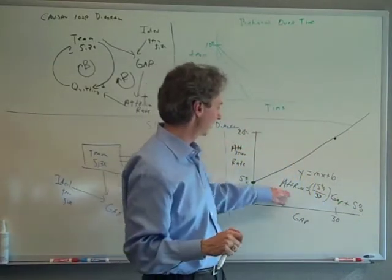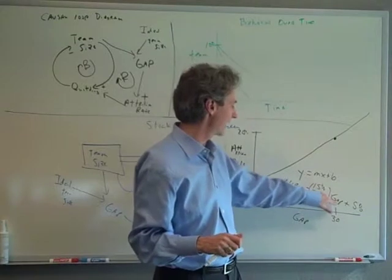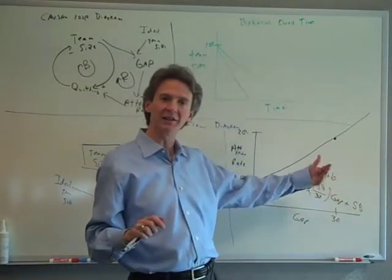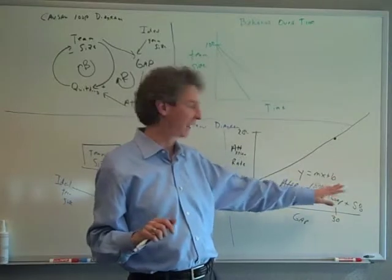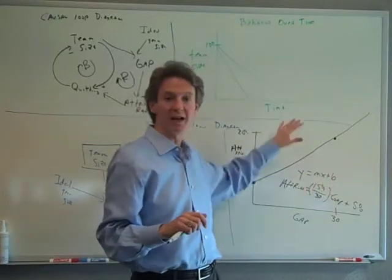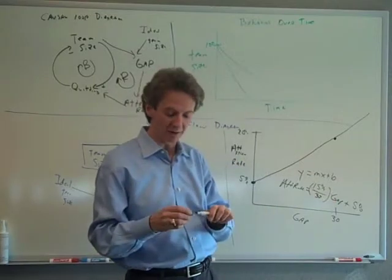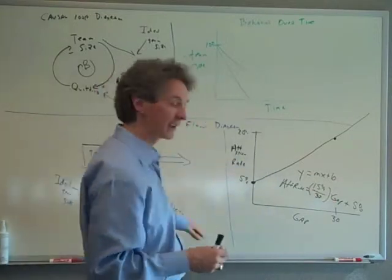So that's what the equation is. The attrition rate is fifteen percent over thirty, times the gap, plus five percent. I hope that wasn't too confusing. That's really just seventh grade kind of linear equations, and how to take a graph and turn it into an equation. So we're all set now to model it in Excel.